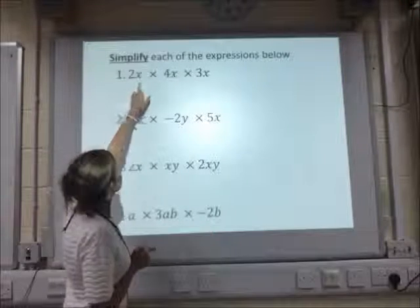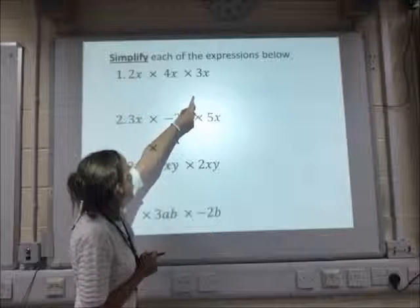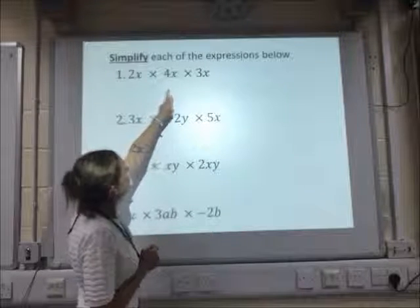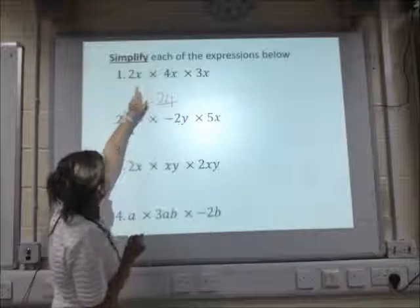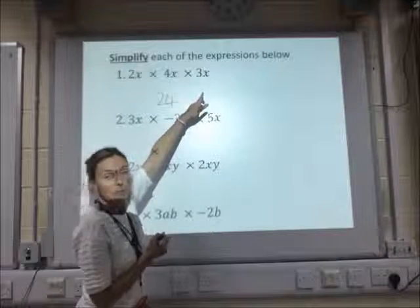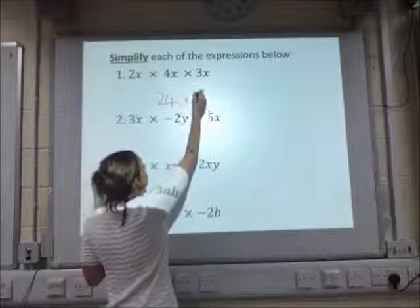Okay, so you've got 2 times 4 times 3. 2 times 4 is 8, times 3 is 24. Then you've got x times x times x, which is x cubed.